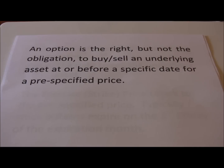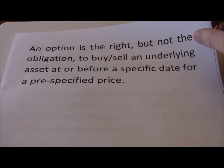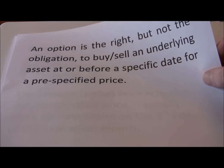First, a definition. An option is just the right but not the obligation to buy or sell an underlying asset. Usually that underlying asset is shares of common stock, at or before a specific date, for a pre-specified price. That pre-specified price is referred to as the strike price or exercise price.